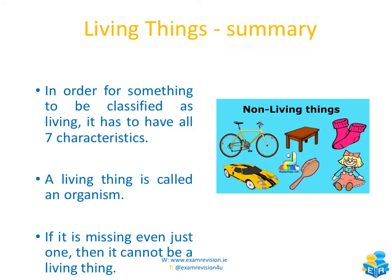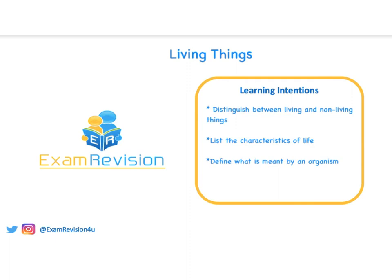In summary, in order for something to be classified as living, it has to have all seven characteristics. A living thing with all seven of those characteristics is called an organism. If it's missing just one of the seven, it cannot be a living thing — even if it has six out of the seven, it would be a non-living thing. Examples of non-living things include a bike, a car, a table, and a doll. A bike or car can move, but they don't have all seven characteristics, so they cannot be living things. We now know how to distinguish between living and non-living things, that there are seven characteristics of life, and that an organism is a living thing.